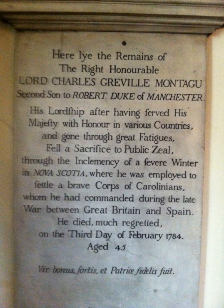Dissent over governance of the province led to the appointment of a deputy governor to administer the northern half of the Carolina colony in 1691. The division of the Carolina province into North Carolina and South Carolina became complete in 1712.